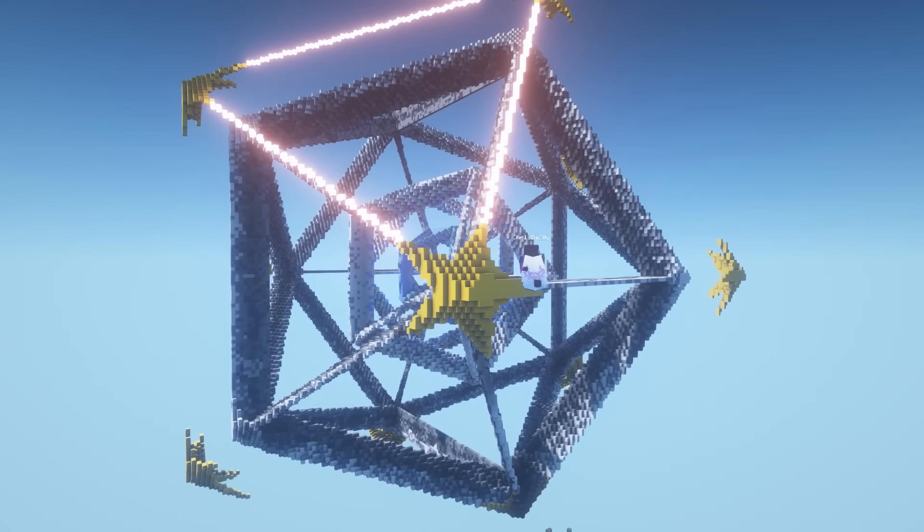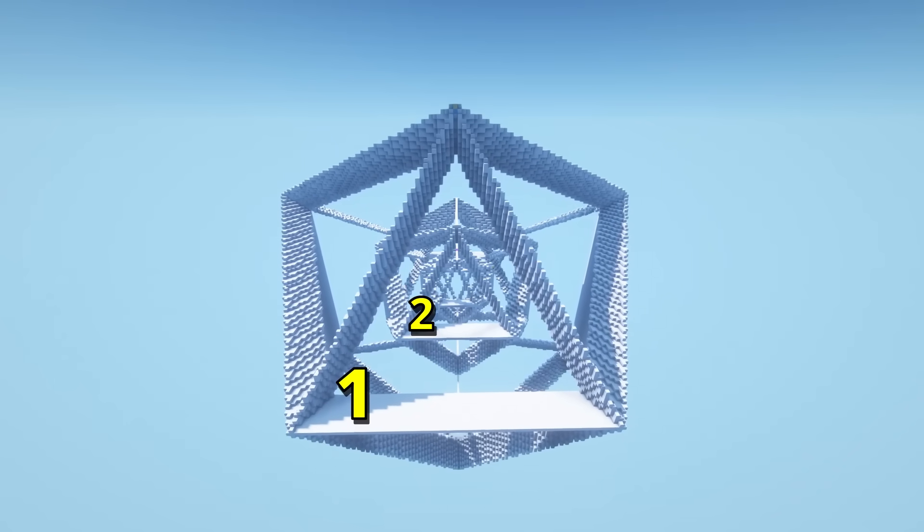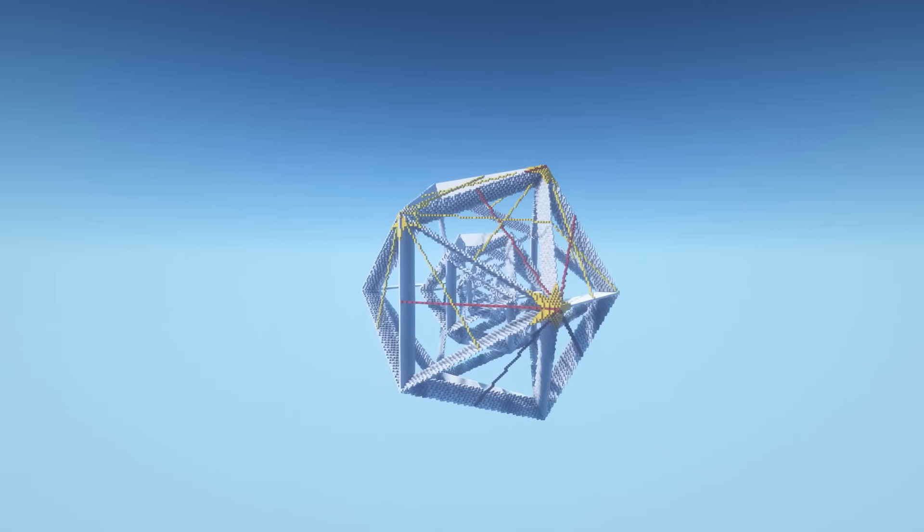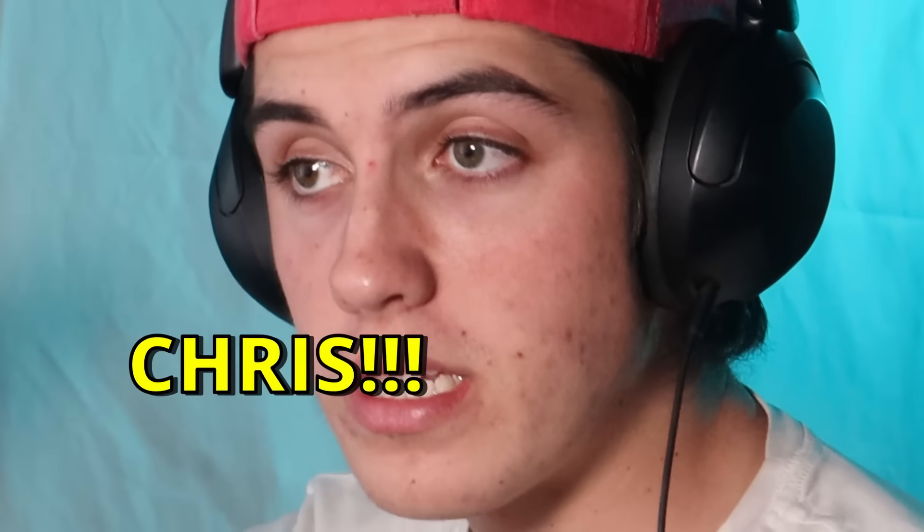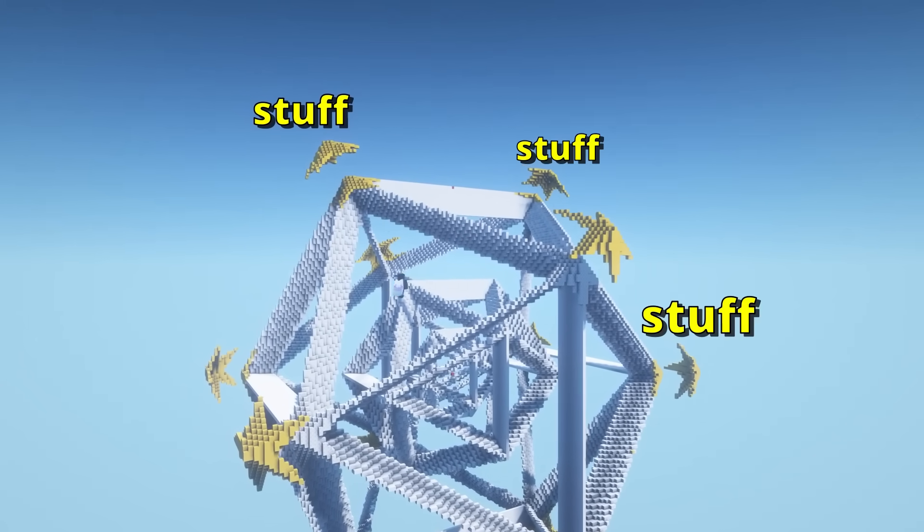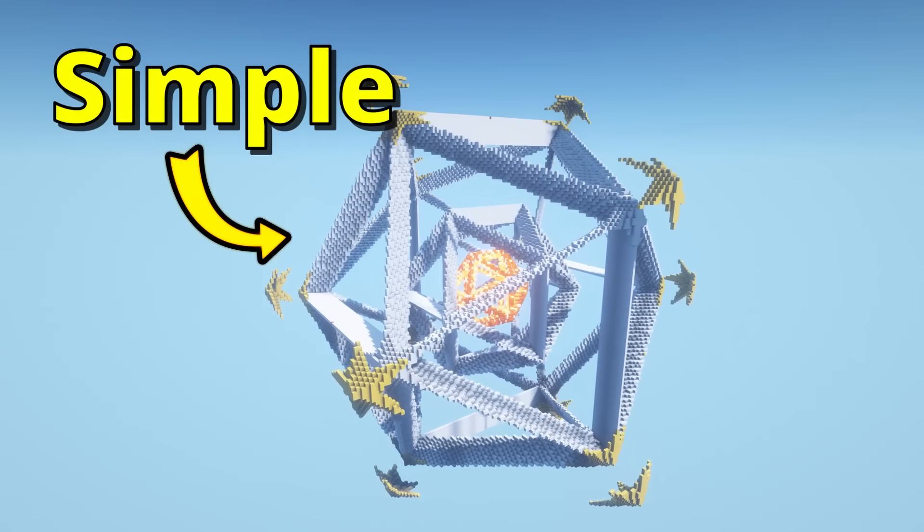This looks so weird. Next, I built the shape inside of itself over and over again before adding a star of light to each corner. Now you might be wondering, Chris, why are you adding all this extra stuff to the build? Well, because this could be so much more than a simple shape.